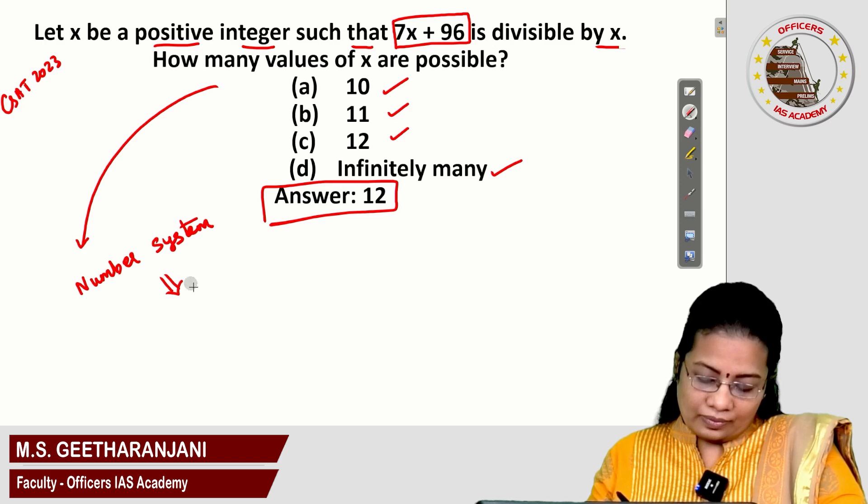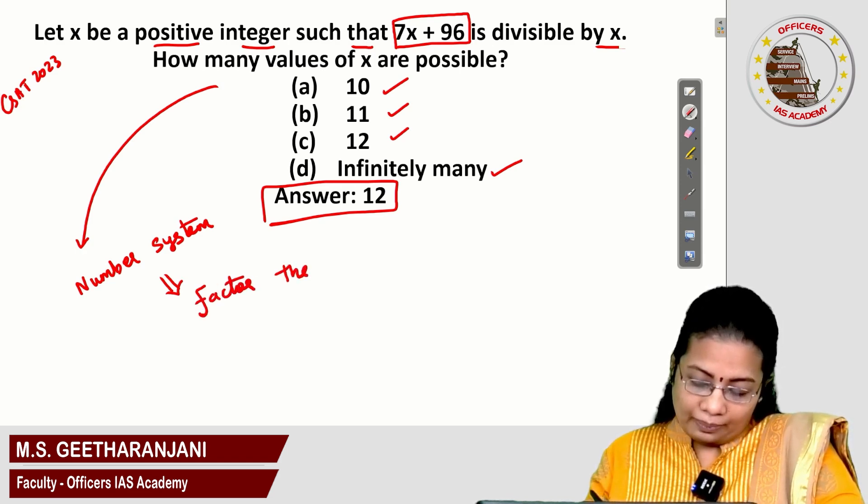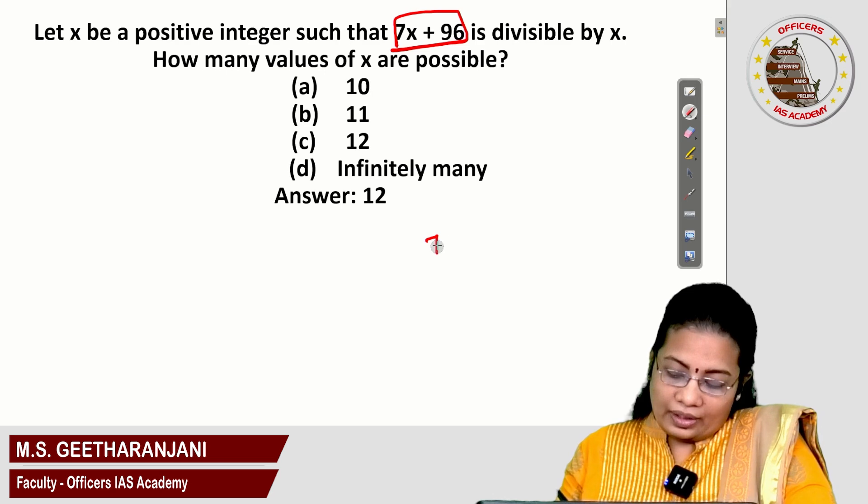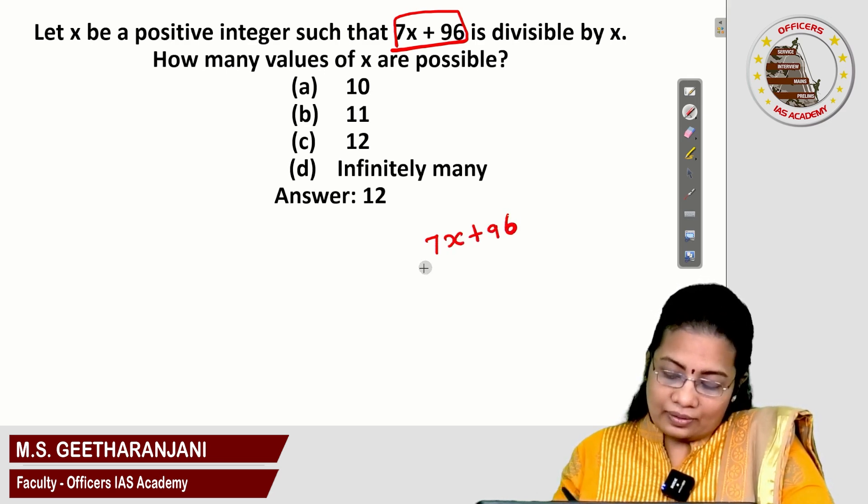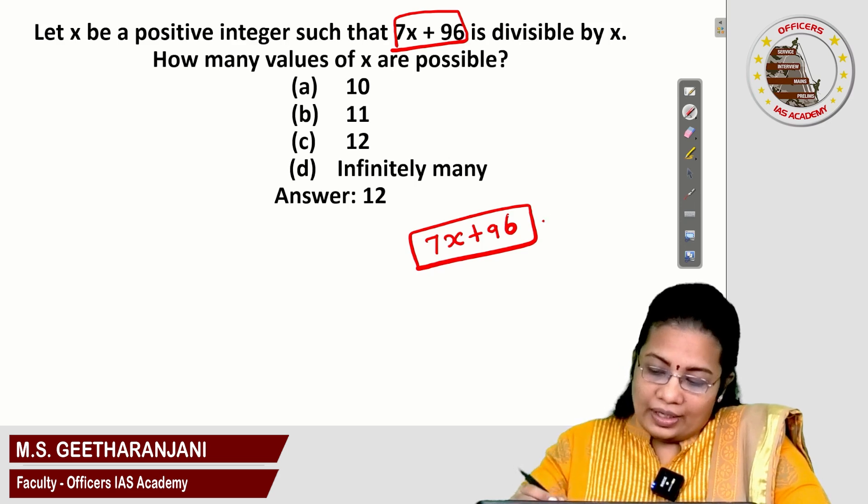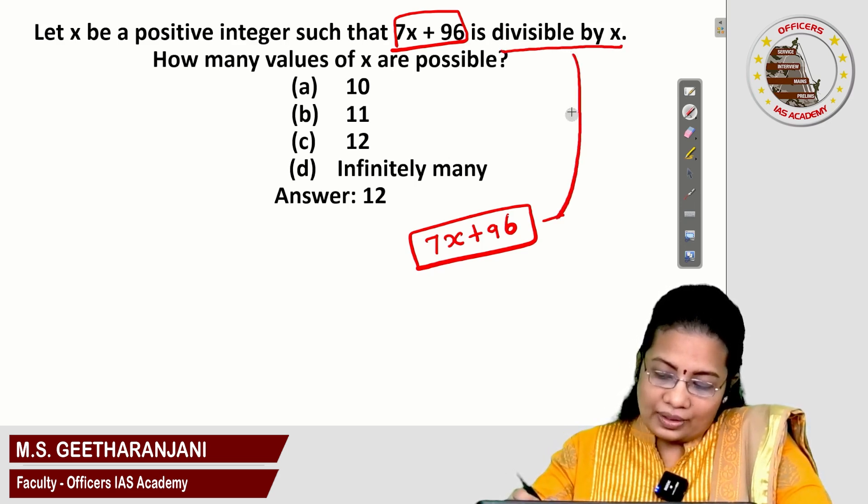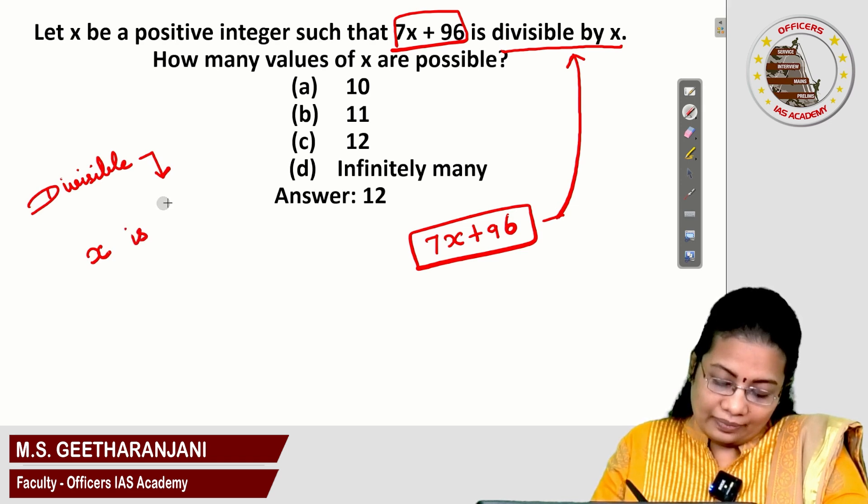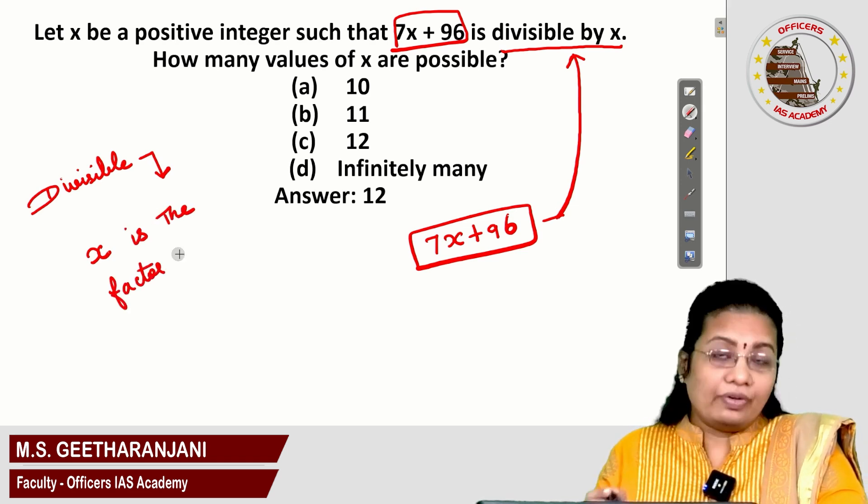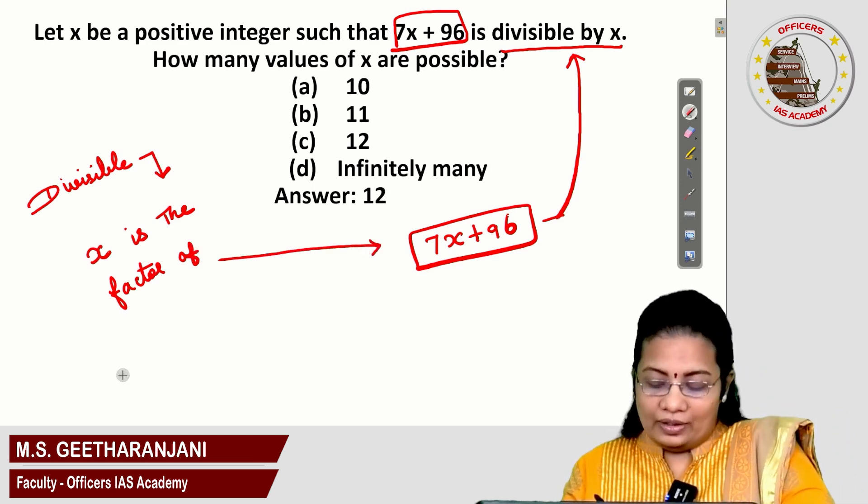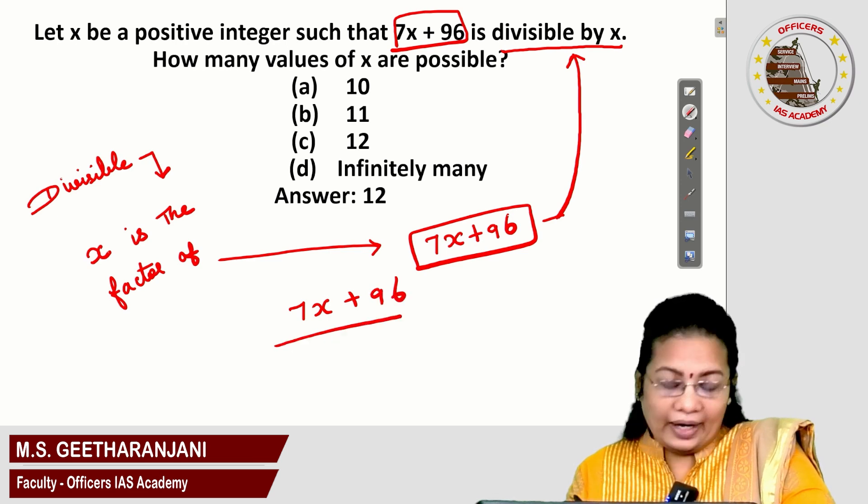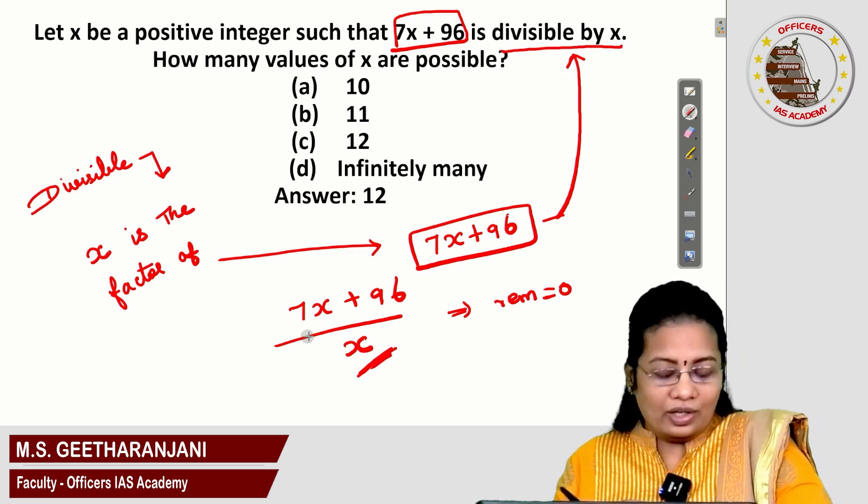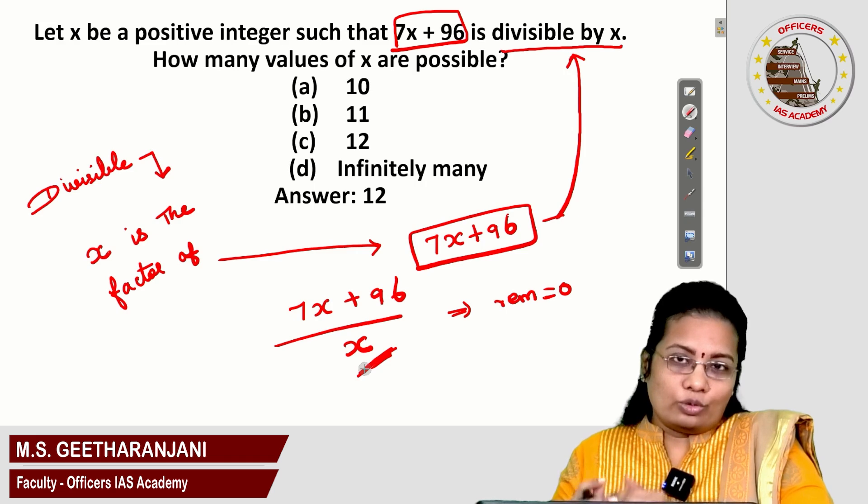Under number system, the subtopic is factor theorem. Let us analyze the question. Given is 7x plus 96. This is a number, and this number is divisible by x. Divisible means x is the factor of the given number 7x plus 96. That is, 7x plus 96 while dividing by x, the remainder is 0. The remainder is 0 means x must be the factor of 7x as well as the factor of 96. This is the way of decoding the question.